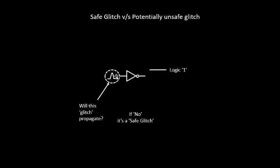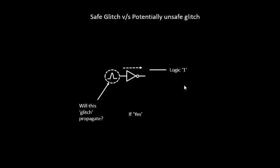It won't be propagating this particular glitch through it, and as a result the output of the inverter won't change irrespective of the glitch at the input. We did not fix this kind of glitch, so the conclusion is: if the glitch doesn't propagate through a logic, we say it's a safe glitch. On the other hand, if it propagates through this particular logic and creates a glitch at the output of the inverter, it's definitely an unsafe glitch.